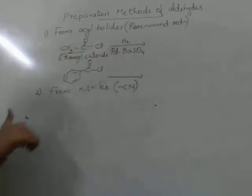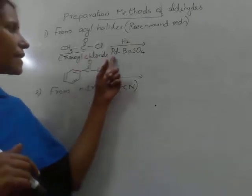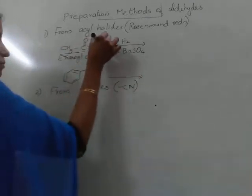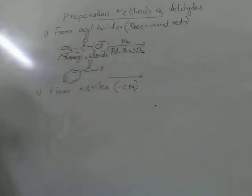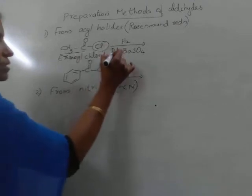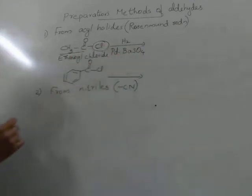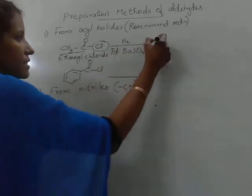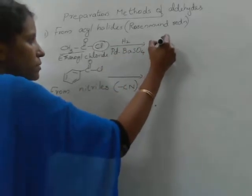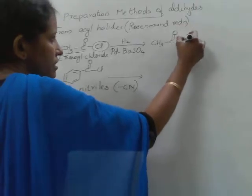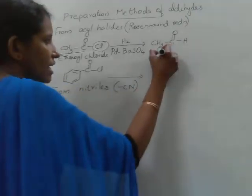When acetyl chloride is treated with hydrogen in the presence of palladium barium sulphate catalyst, the chlorine atom will be replaced by hydrogen. This is a reduction reaction — addition of hydrogen. Hydrogenation in the presence of palladium barium sulphate catalyst converts ethanoyl chloride: chlorine is replaced by hydrogen, and the product obtained is CH₃CHO, which means we get ethanal.